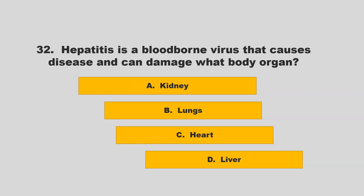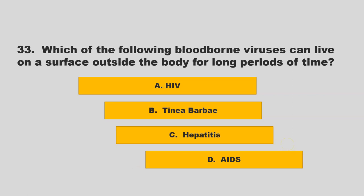Hepatitis is a bloodborne virus that causes disease and can damage what body organ? Options: kidney, lungs, heart, or liver. The correct answer is D: liver.